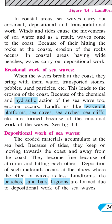Waves create coast erosion especially by hitting at the rocks. Coast erosion of rocks occurs in coastal areas having wide beaches. Waves also carry out deposition work over the coastal region — they carry sand particles and deposit them in coastal regions, creating larger beaches in different parts of the world.